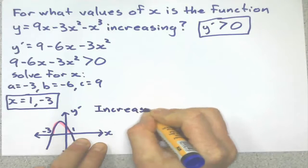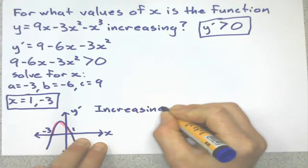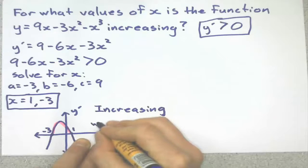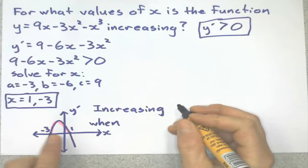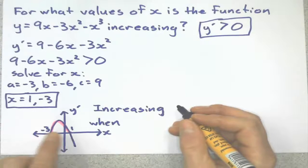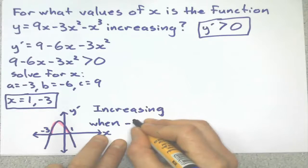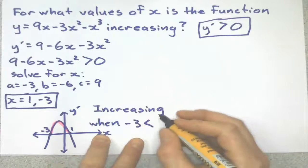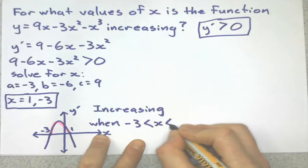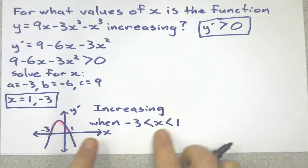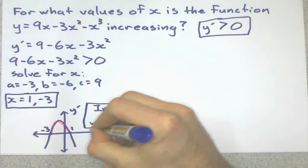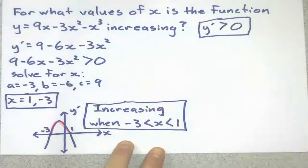It can't equal negative 3 and it can't equal 1 because that's when it's 0. So I've got to watch out when I write my final answer. It's increasing when x is between negative 3 and 1, but can't equal those. So we've got to watch out which inequality sign we use. And that's my answer.